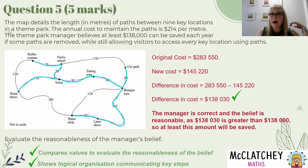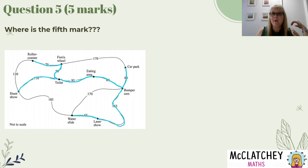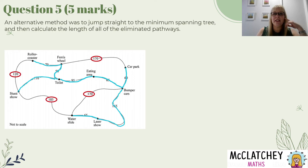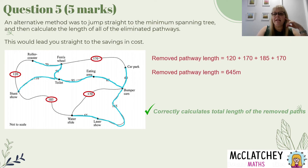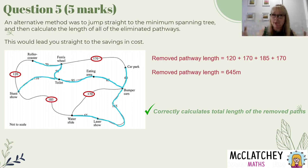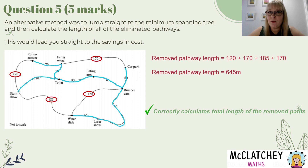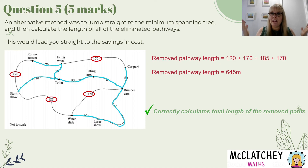So far we've only accounted for four marks, and you might wonder where the fifth mark was. With the QCAA solution, they went straight to the savings, and correctly calculating the total length of the removed paths was that fifth mark. If you didn't use the QCAA's method, you may not have been able to attract that fifth mark. However, the QCAA are quite a benevolent group — they really want to see the best out of students. If you used the alternative method and clearly showed the cost of the missing paths by calculating the difference, I think they would have been okay with that, because there's not always one method to reach a final answer.